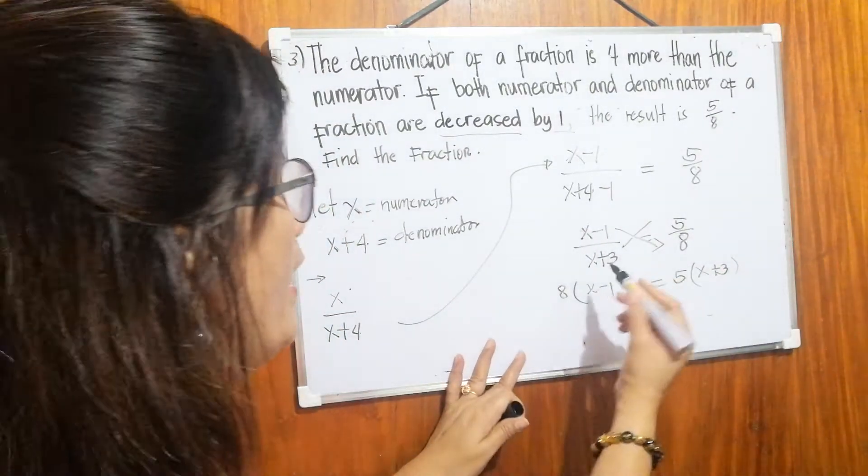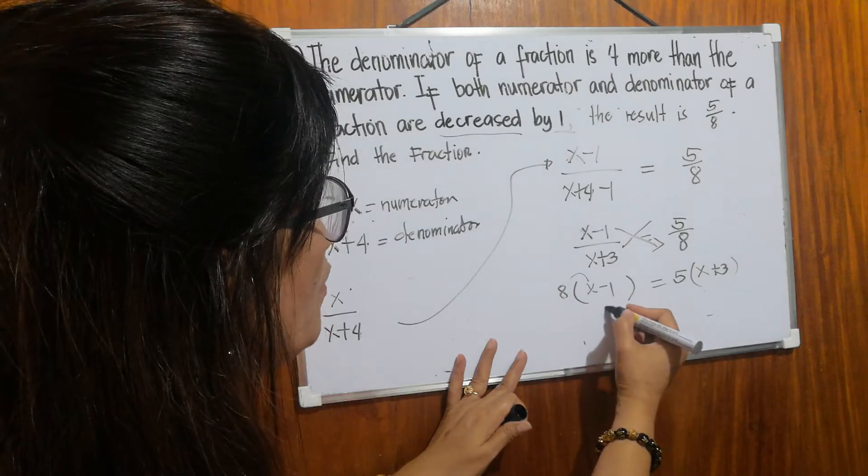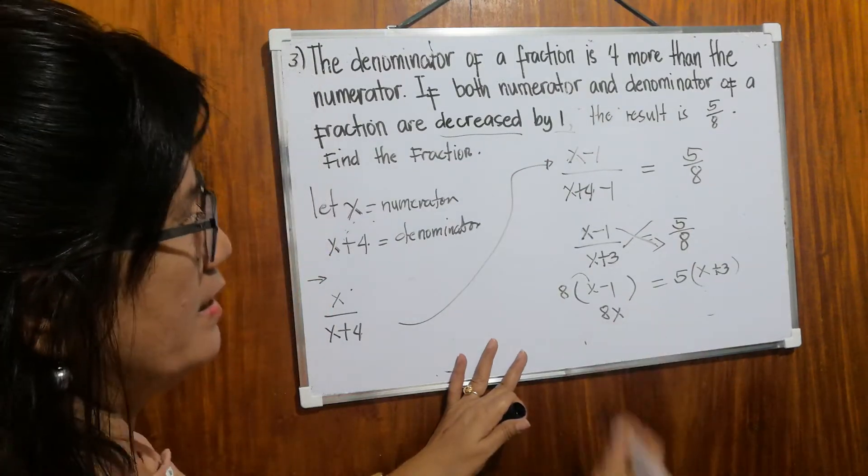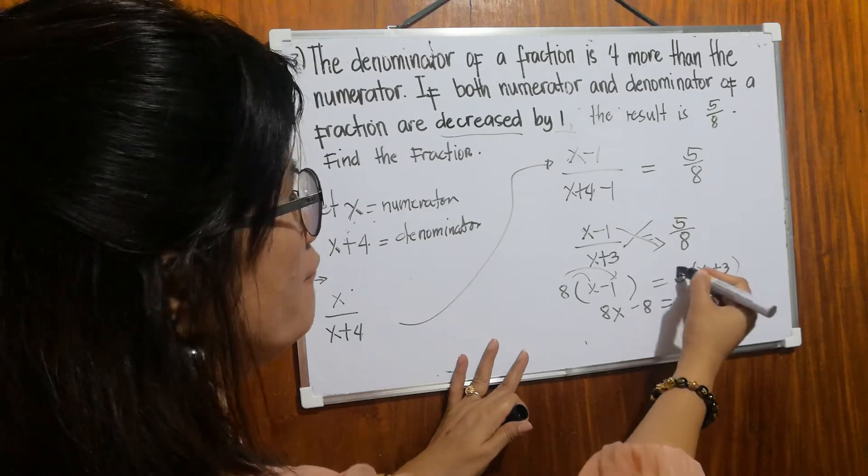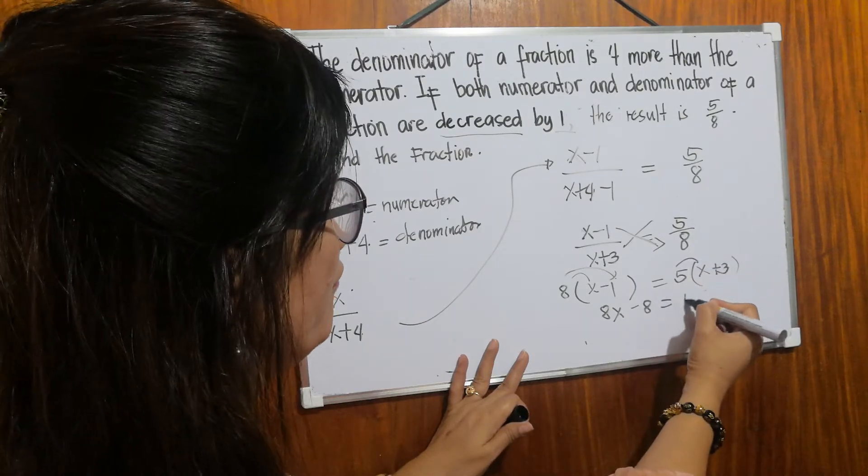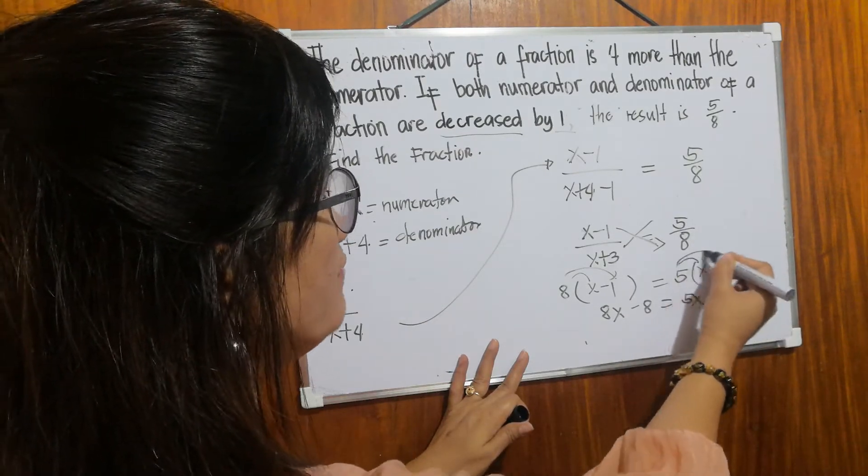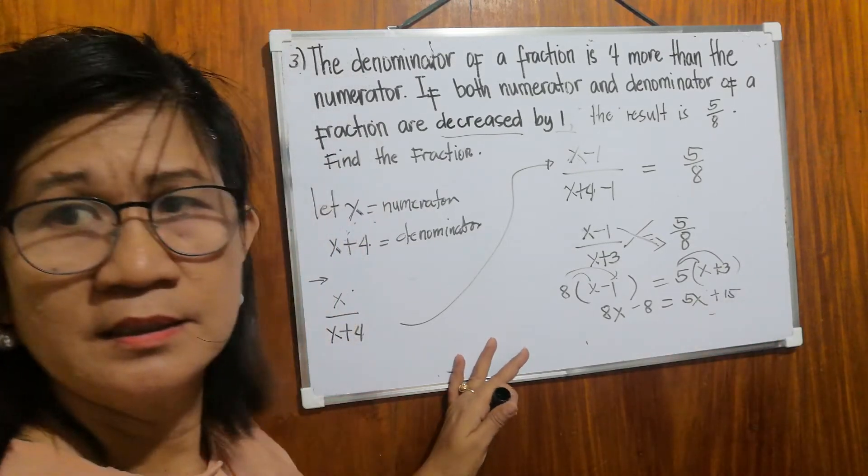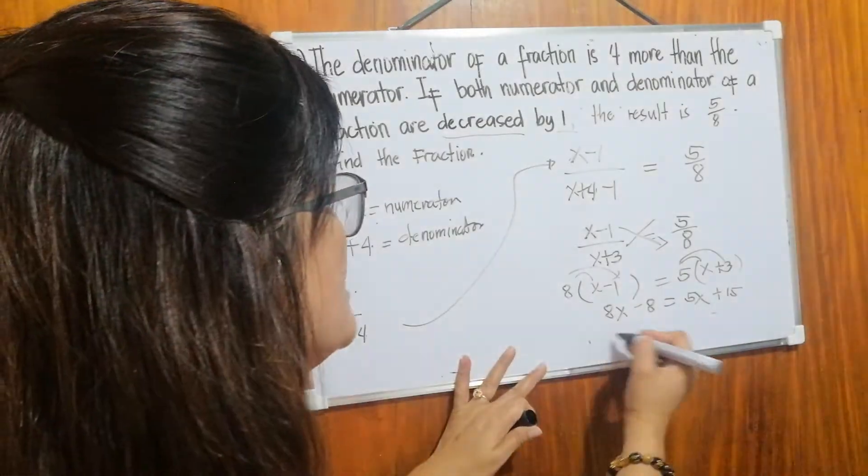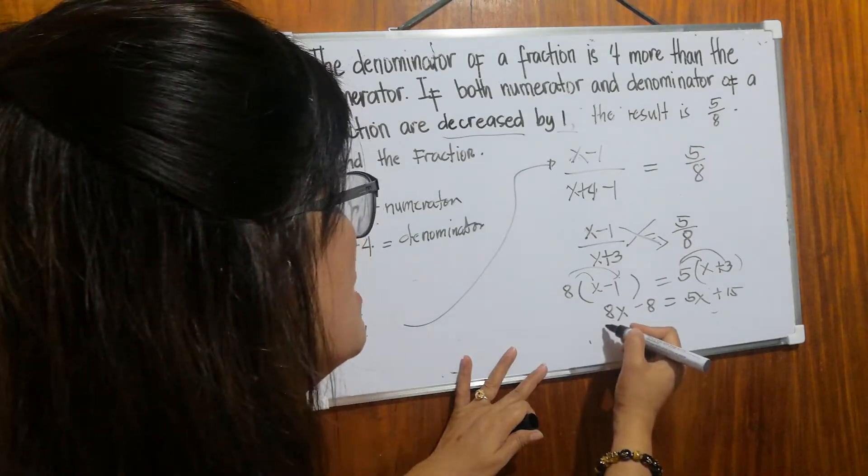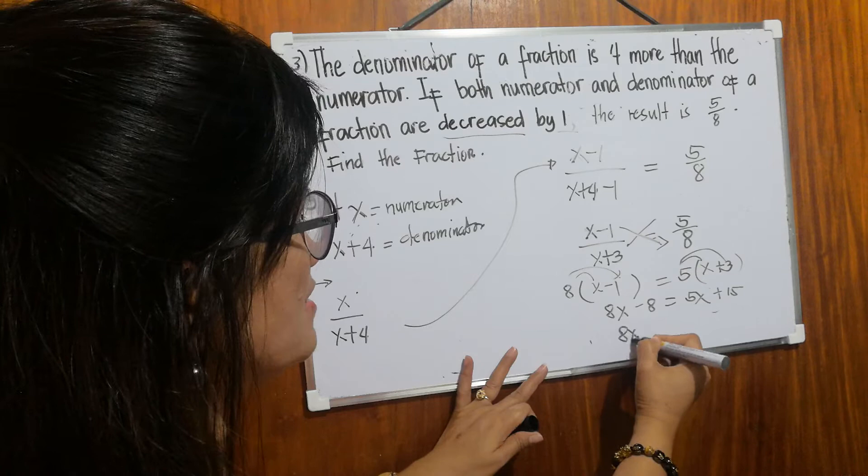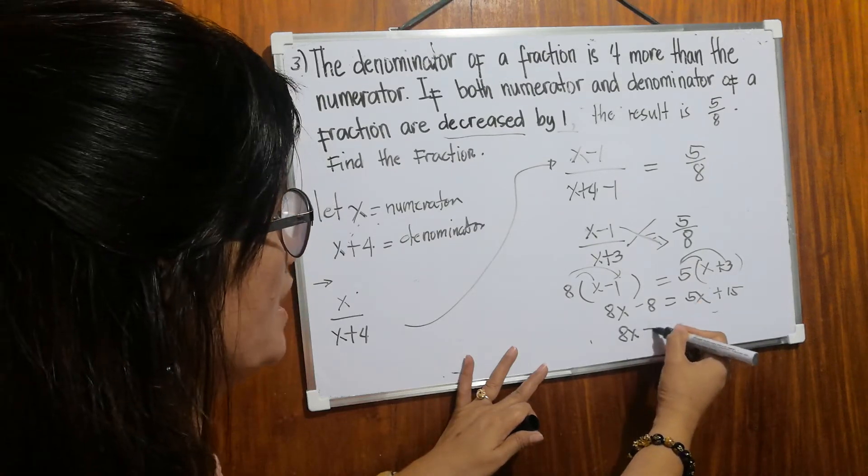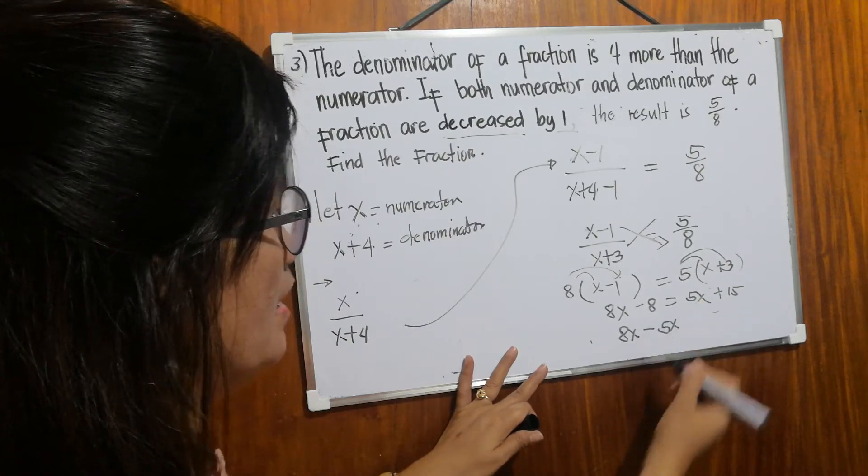Then let's simplify. Eight times x equals 8x. Eight times negative one is negative eight. Five times x equals 5x. Five times three equals fifteen. Then let's bring down, let's transpose. So we'll move 5x. It should be next to 8x. You bring down 8x. And then you transpose positive 5x, sorry, it becomes negative 5x.